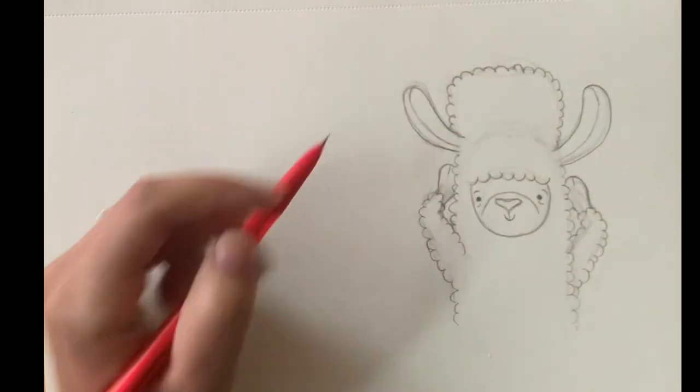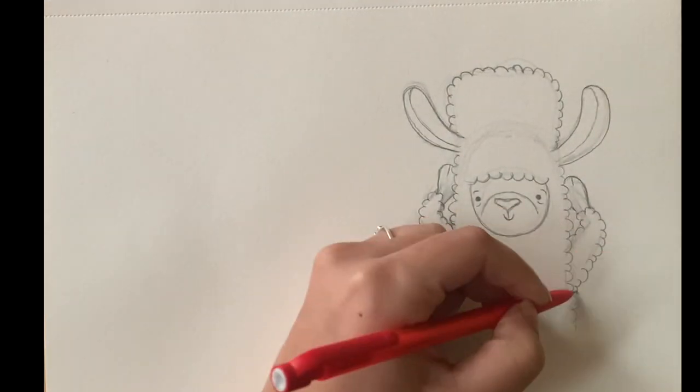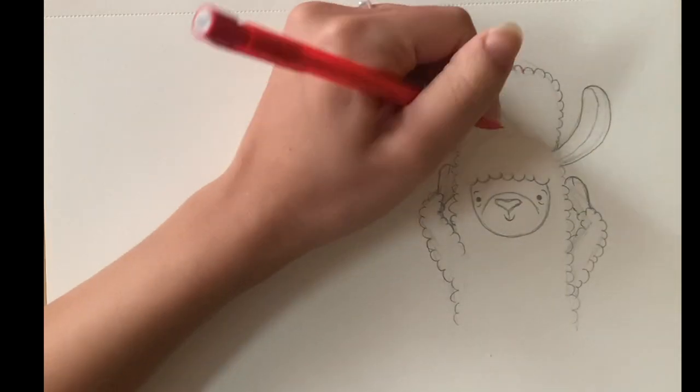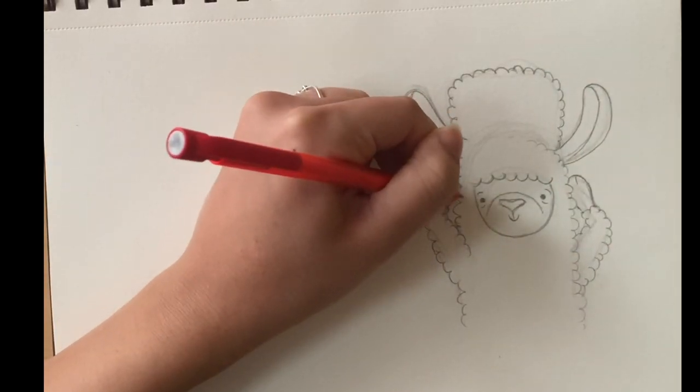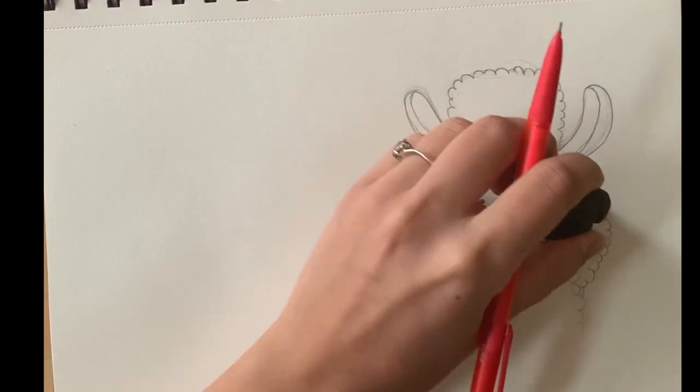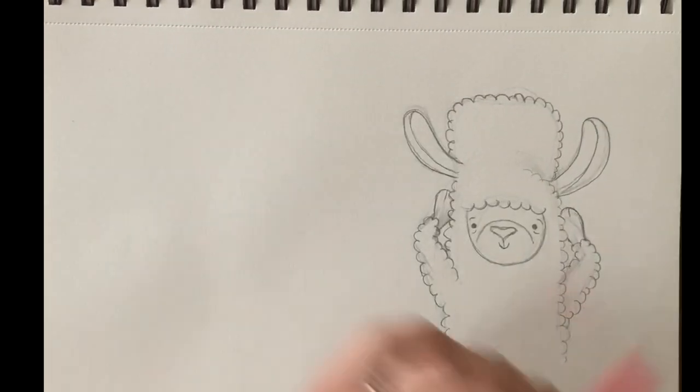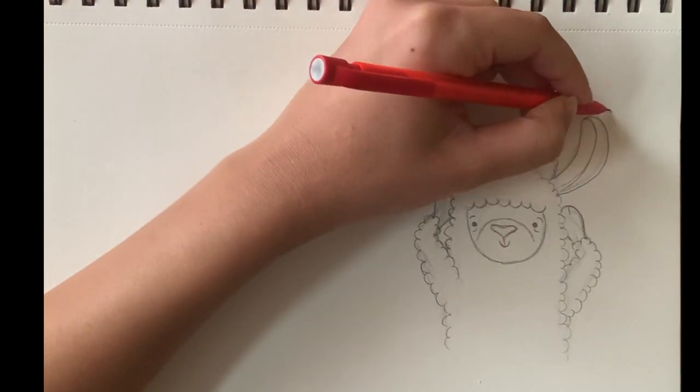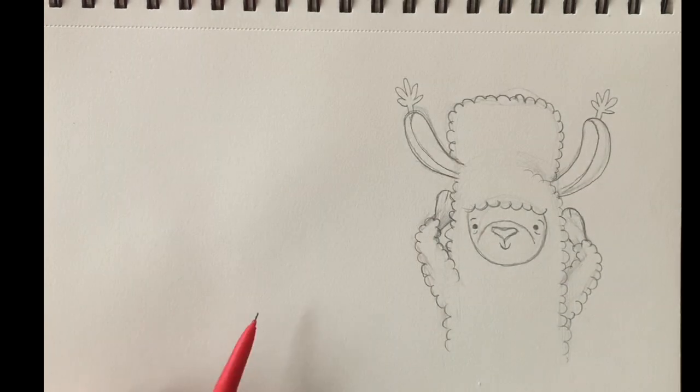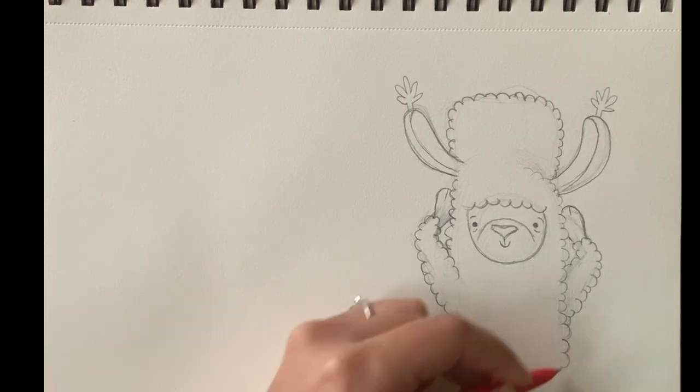At this point I'm just adding some other little details, erasing little ghost lines that we don't need. I'm going to go ahead and add his little ear toppers on top of both of his ears—they look like little flowers sticking out. And there we go, he is a finished character.